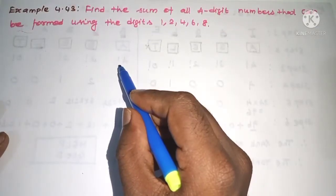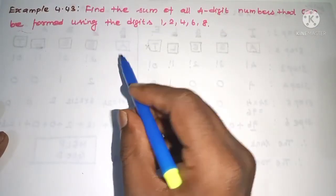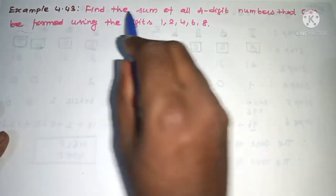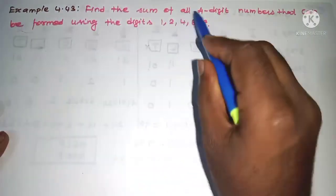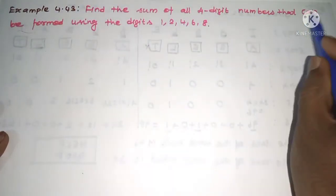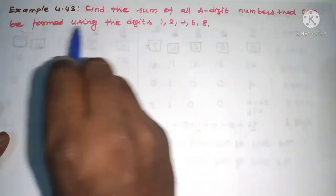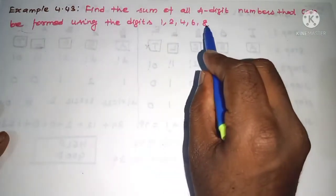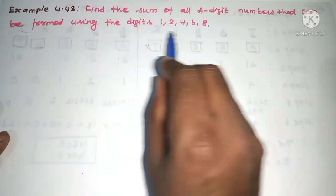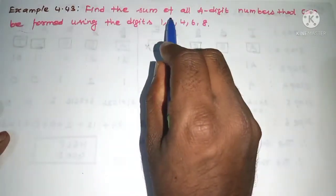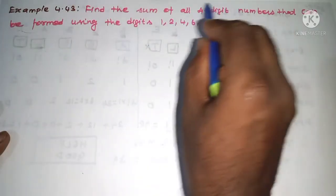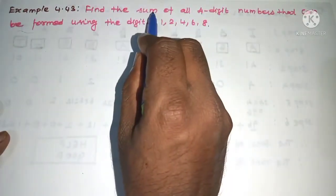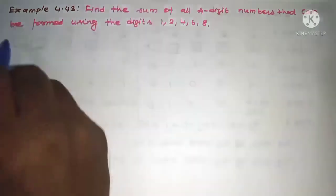Hi student, this is Salama Max Solution 11th Standard Example 4.43. Find the sum of all 4-digit numbers that can be formed using the digits 1, 2, 4, 6, and 8. We have 5 digits and we need to create 4-digit numbers and find their sum.